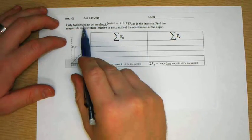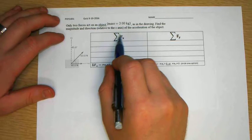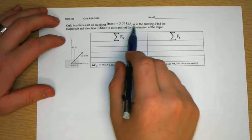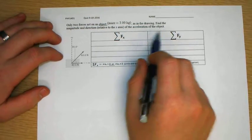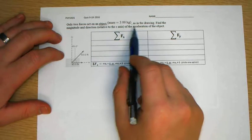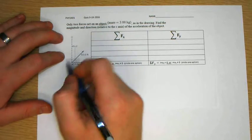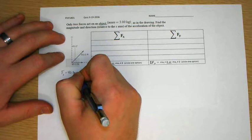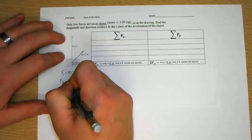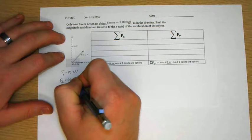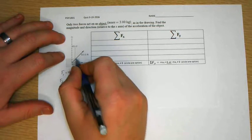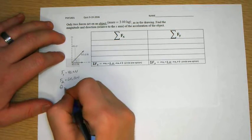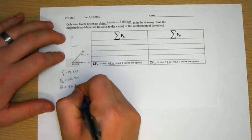Okay, so only two forces are acting on an object with mass 3 kilograms. Find the magnitude and direction of the acceleration of the object. I'll call this F1 equals 40 newtons, F2 equals 60 newtons, and the theta between F1 and F2 equals 45 degrees.